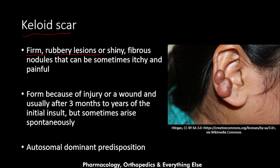Regarding the keloid scar, it is a firm, rubbery lesion or shiny fibrous nodule that can sometimes be itchy and painful. This example shows a keloid on the auricle of the ear — it is shiny, has a darker brown color, and can be itchy and painful. It forms because of an injury or wound.